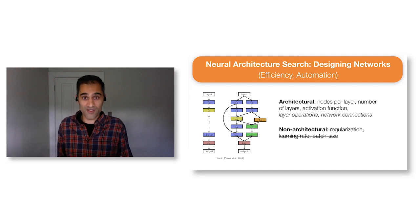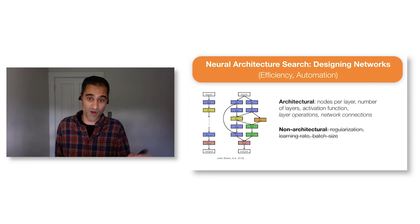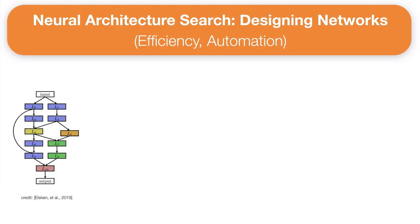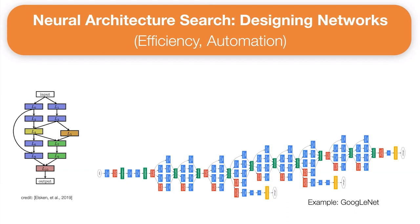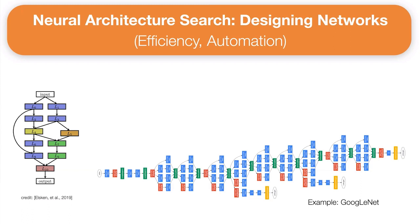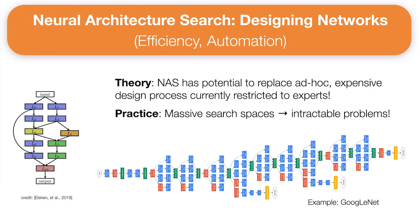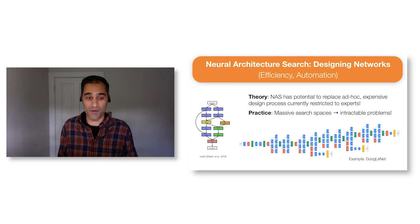The fundamental neural architecture search problem is no longer fiddling with a fixed backbone, but rather learning the design in the first place. Modern deep learning networks look much like GoogleNet, or perhaps even more complex. While in theory NAS has the potential to replace this ad hoc, expensive, expert-driven process, in practice the search spaces are absolutely massive, which means the fully general NAS problem is just intractable.